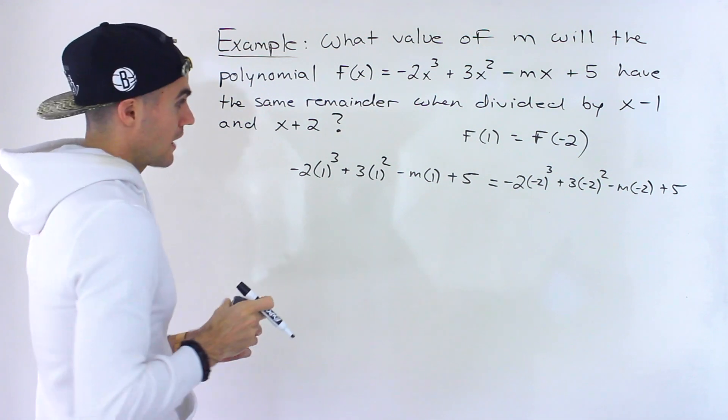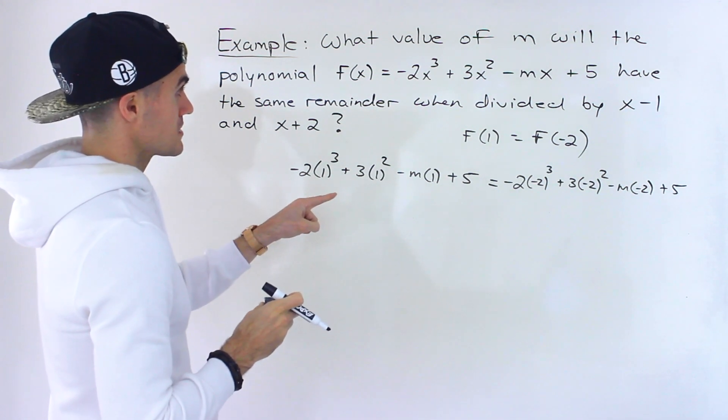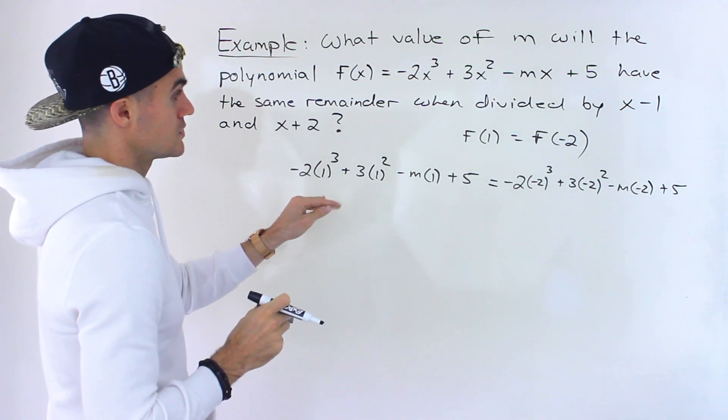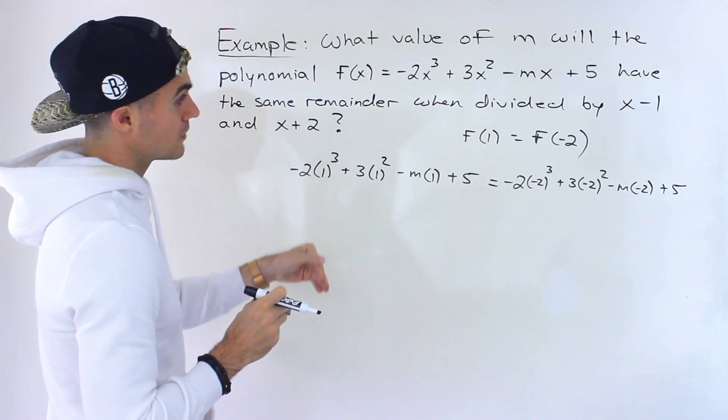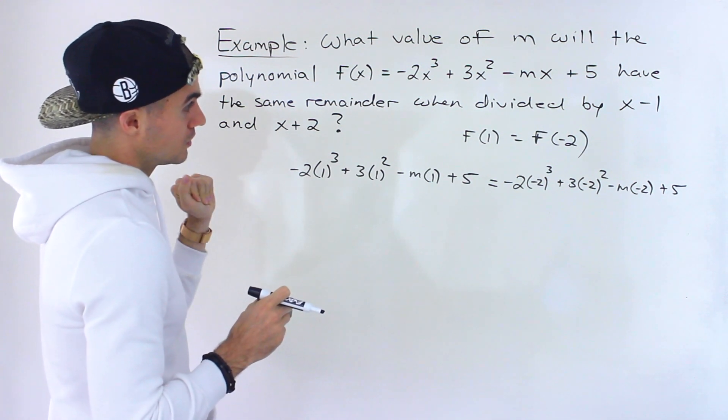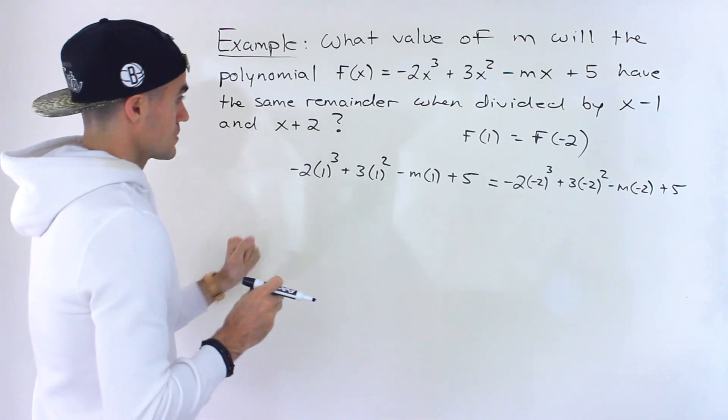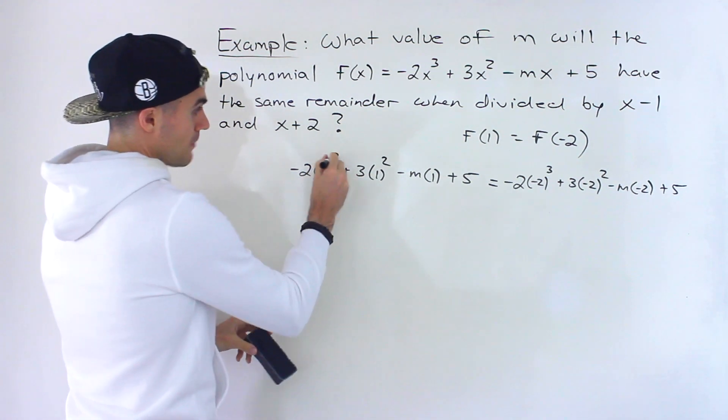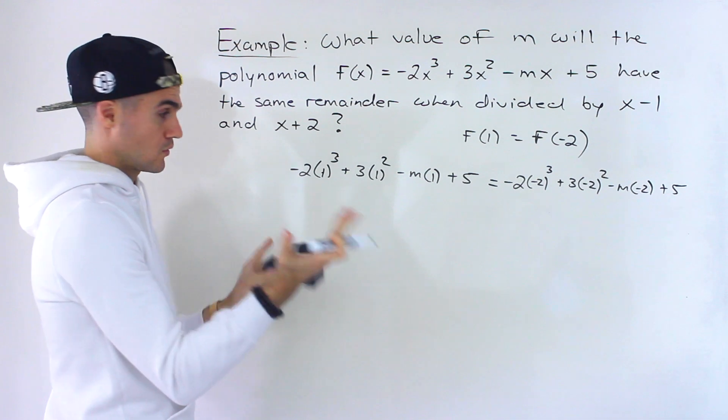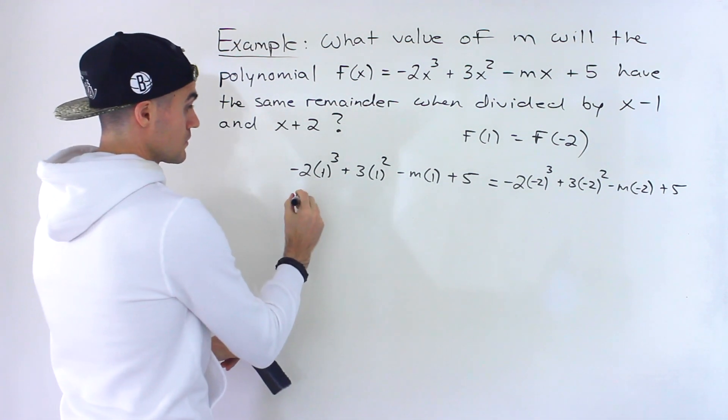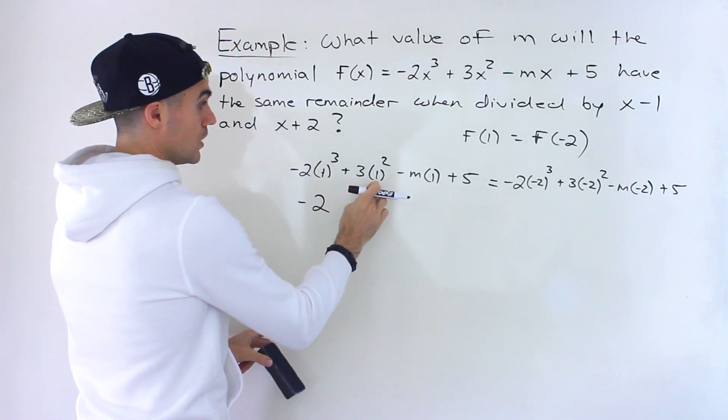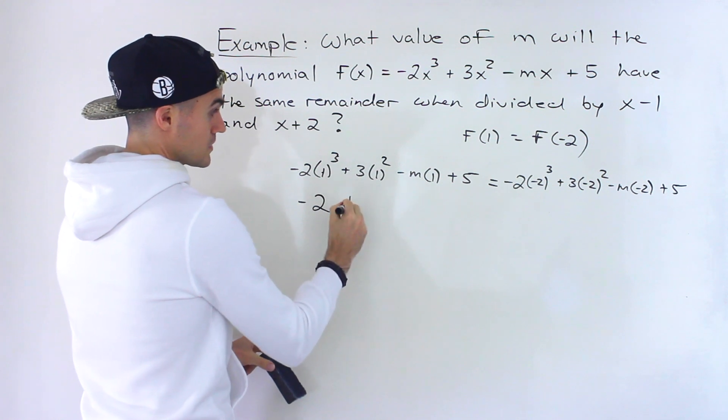Just be careful with your algebra here with all these exponents and signs. Check your work every couple of steps. 1³ is just 1 times -2, that gives us -2. 1² is just 1 times 3, that would give us 3. 1 times -m is just -m + 5.